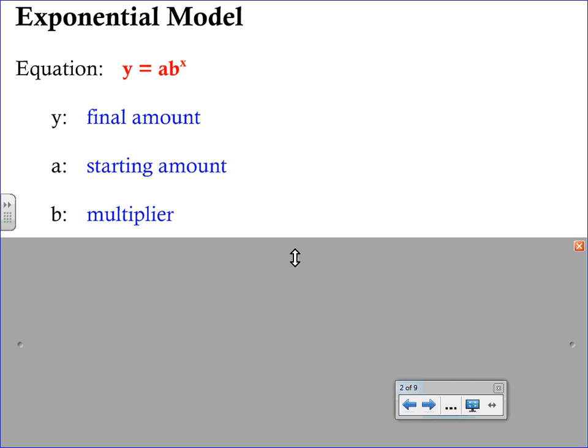But unlike last time where you had to find the rate and then change the rate to a decimal and then do either 1 plus r or 1 minus r, the multiplier is going to be given to us by just reading the words in the problem.